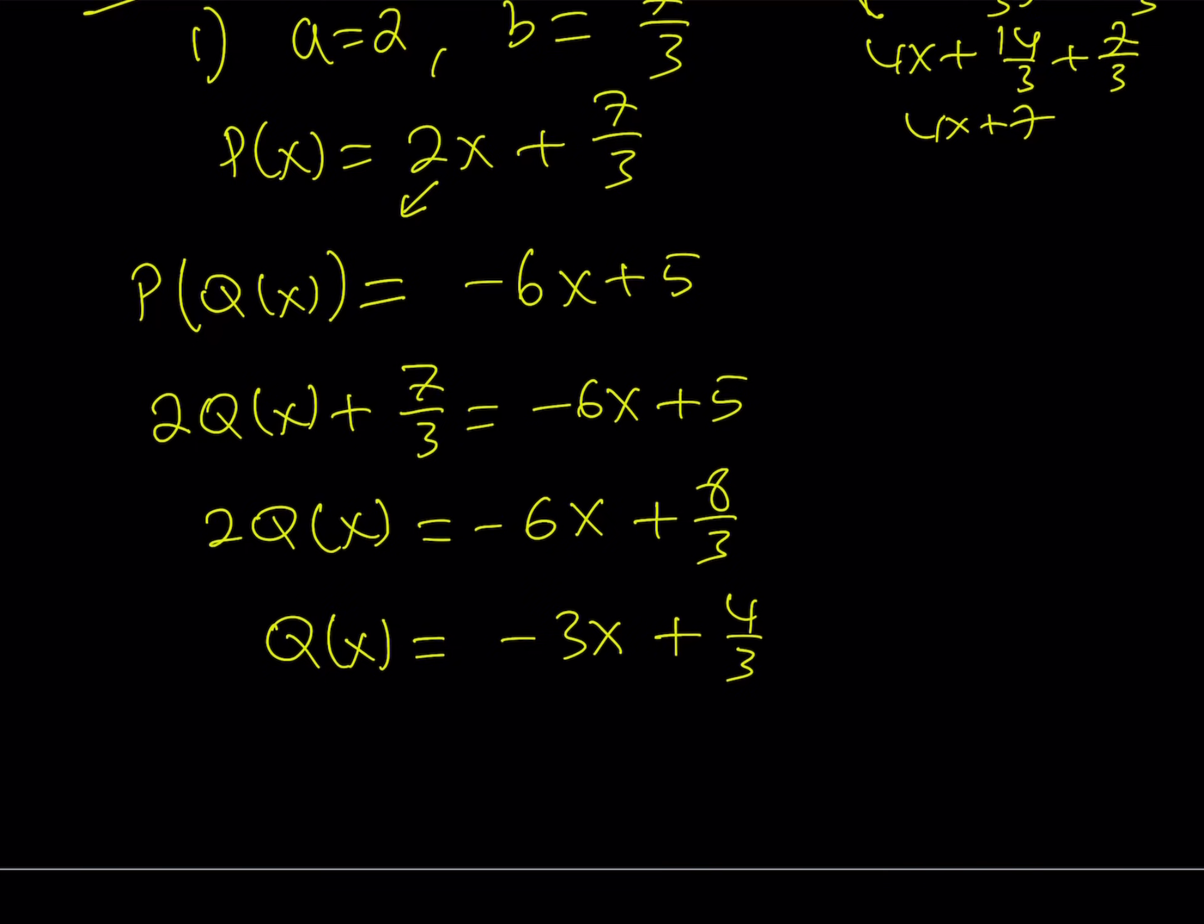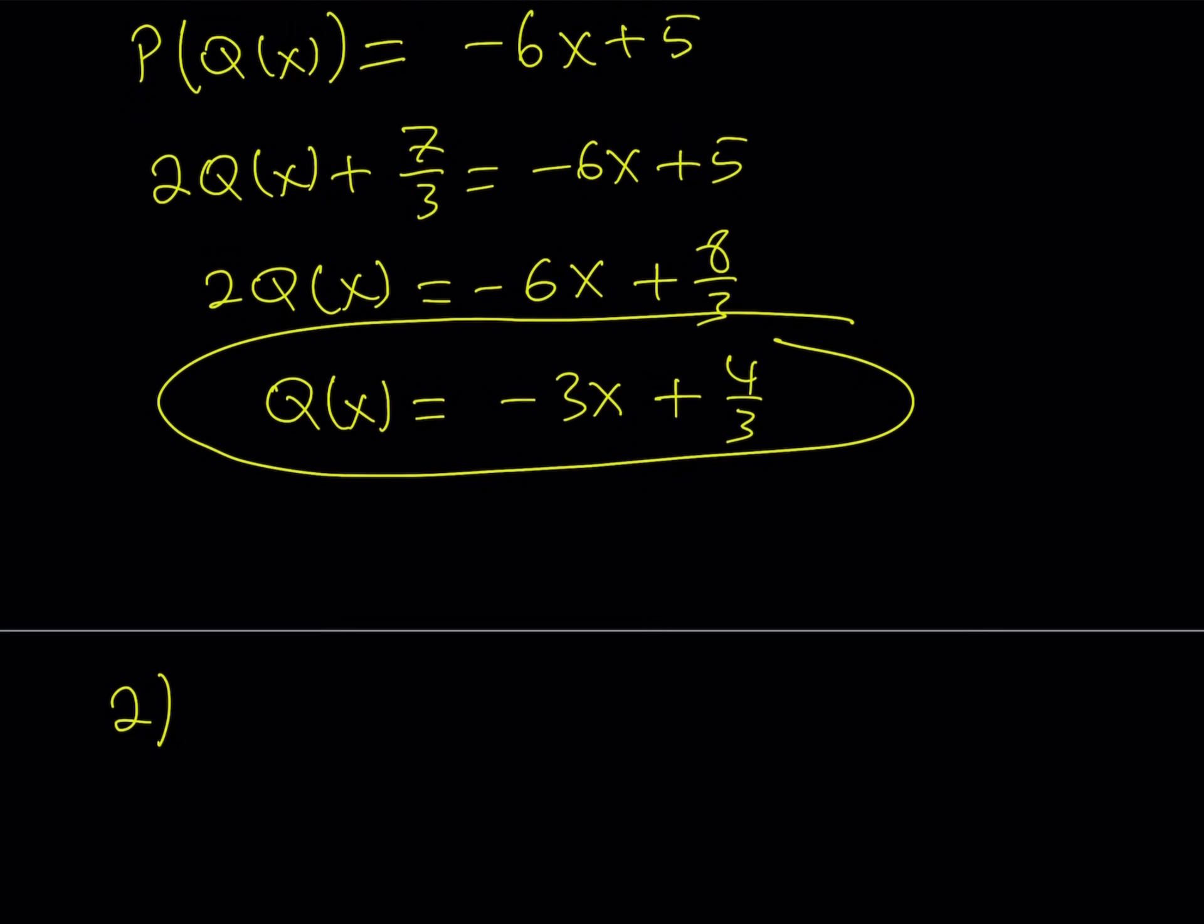So for this P of X value we get this Q of X value. That gives us a solution as an ordered pair, and we're going to write these at the end so don't worry about keeping track of them right now. Let's go ahead and take a look at the second case.